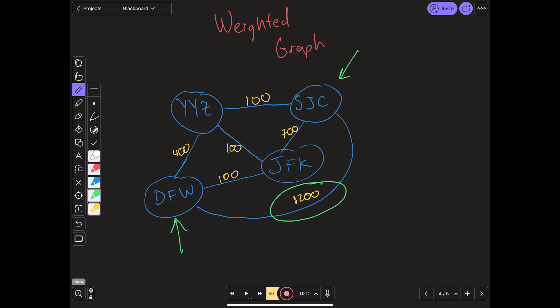However, if we were to take an alternate route by coming from SJC to YYZ, then to JFK, and then from JFK to Dallas-Fort Worth, we're actually only spending 100 plus 100 plus 100, which comes out to a total of $300 to get there. Which is a very cheap way to get there compared to the alternative.